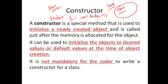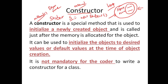When you allocate memory, what will be the initial values assigned? How is the object getting initialized? That is the first question. Internally, a constructor is a method which is called to initialize an object when it is being created. It is automatically called while you are creating an object, and it initializes the object with some values. A constructor is a special method used to initialize a newly created object.